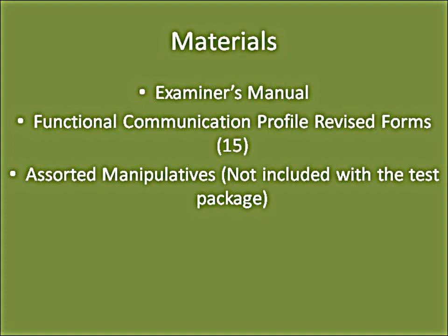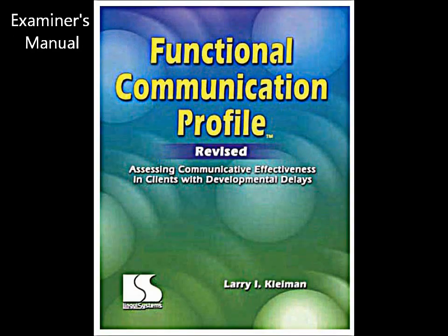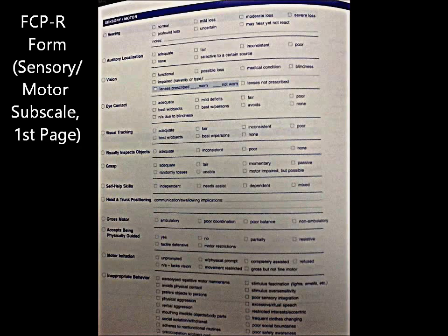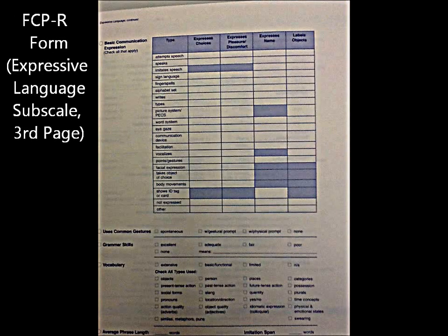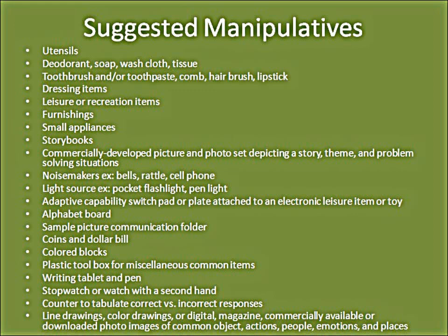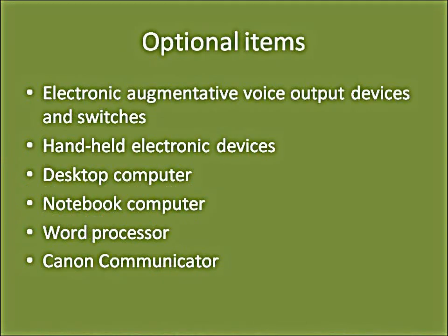Test materials include the examiner's manual, functional communication profile revised forms, and assorted manipulatives, which are not included in the test package. Suggested manipulatives are age-appropriate stimuli and environmental items familiar to the individual. Optional items for non-verbal clients include electronic augmentative voice output devices and switches, hand-held electronic devices, desktop computer, notebook computer, word processor, and Canon communicator.